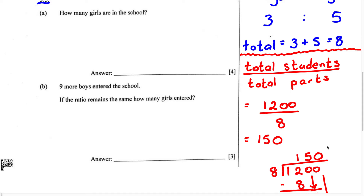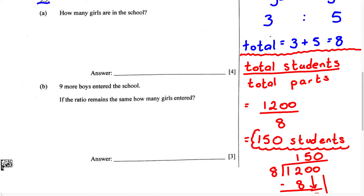Therefore, 1,200 divided by 8 can be simplified into 150. So for one part, we're going to have 150 students. Now this isn't our answer just yet, but this is important to note. One part equals 150 students.